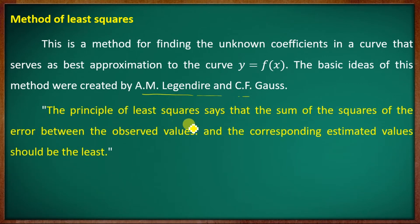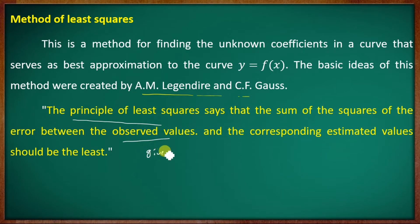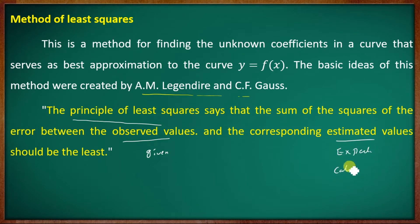The principle of least squares says that the sum of the squares of the error between the observed values and the corresponding estimated values should be least. This is the principle of the least square method.